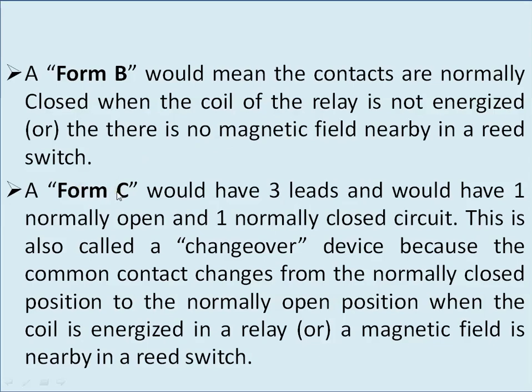For Form C, the contact relay or switch has three leads — one normally open contact and one normally closed contact. This is known as a changeover device, because whenever the relay or switch is energized, the contacts will change over: NC will become NO and NO will become NC.